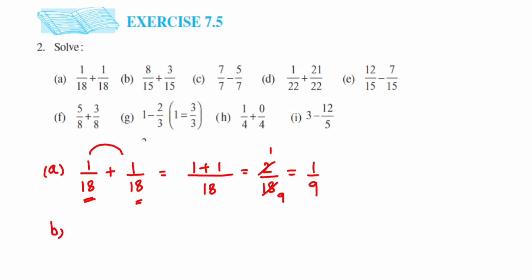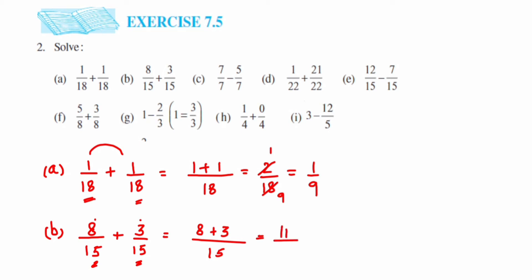Next we have problem b: 8 upon 15 plus 3 upon 15. Again, these are like fractions because the denominators are the same, which is 15. Write down the same denominator, 15, and then just add up the numerators: 8 plus 3 equals 11. So the answer is 11 upon 15. We cannot cancel 11 and 15, so leave the answer like this.